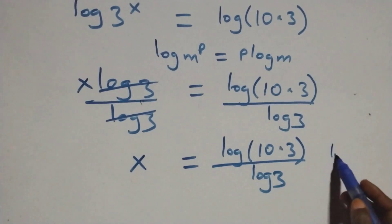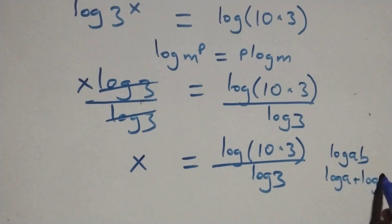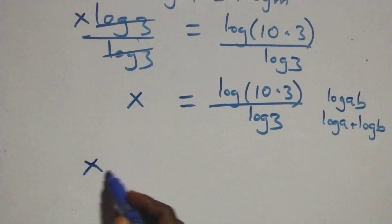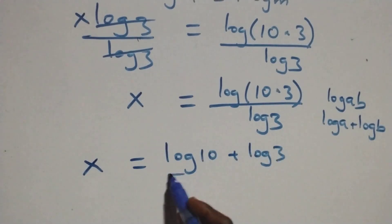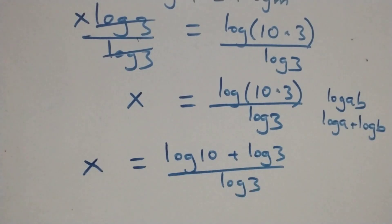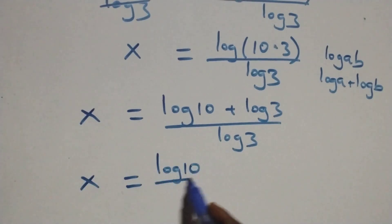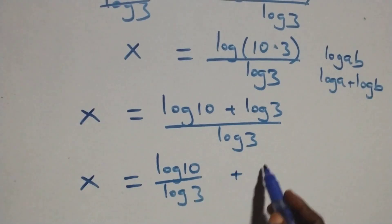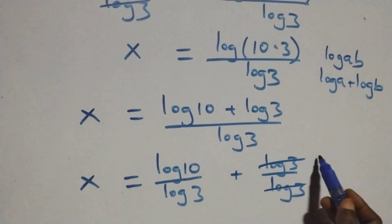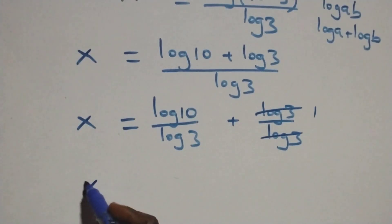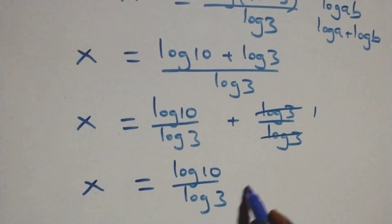Then here, this follows the log product rule: when we have log a times b, this is the same thing as log a plus log b. As this here, we have x equals to log 10 plus log 3 over log 3. Then we separate this into two fractions and we have x equals to log 10 over log 3 plus log 3 over log 3. Then log 3 cancels each other, we have one left, which implies x equals to log 10 over log 3 plus 1.